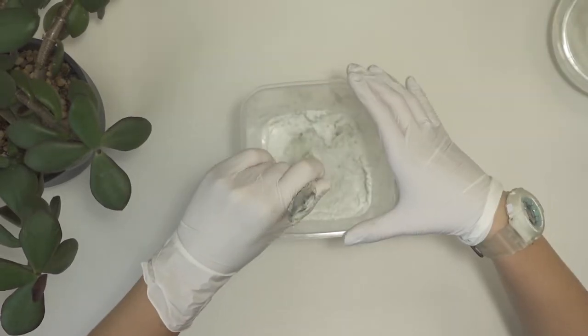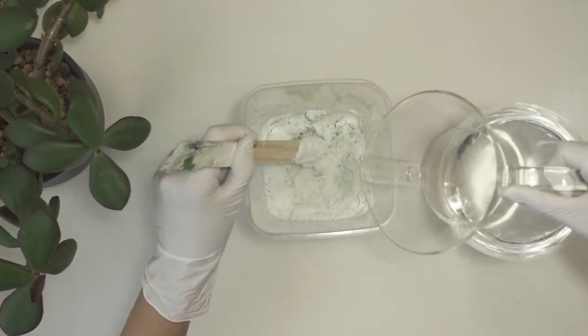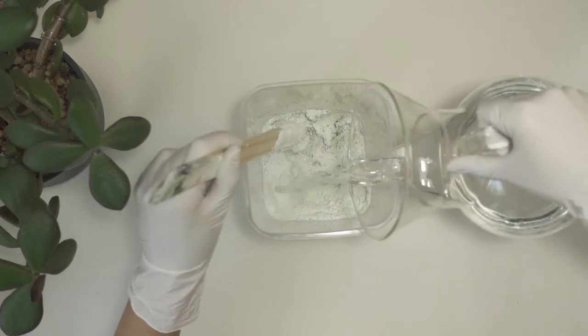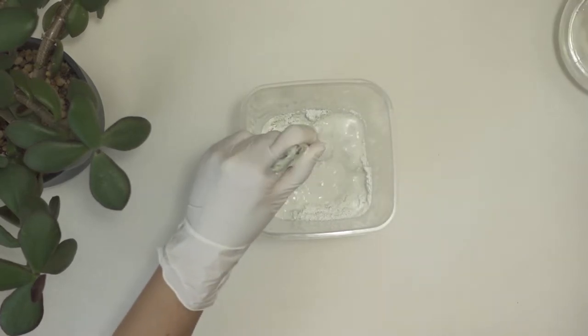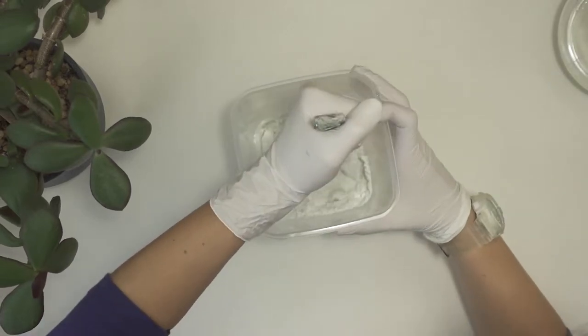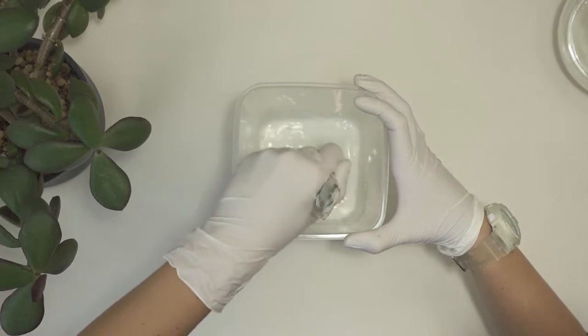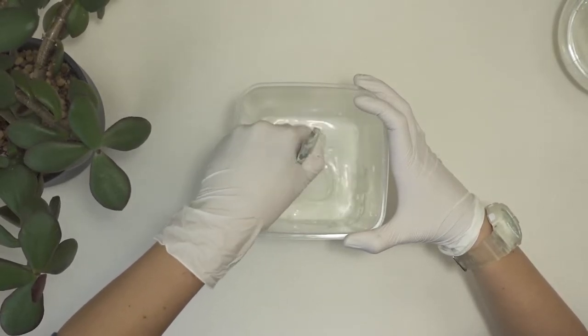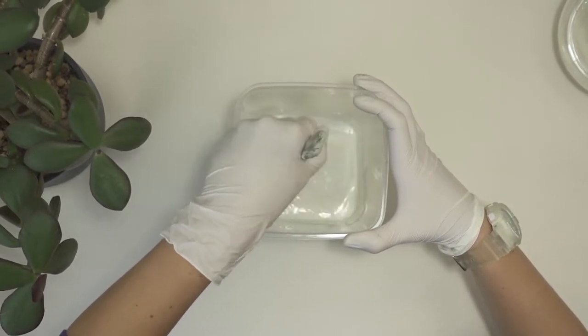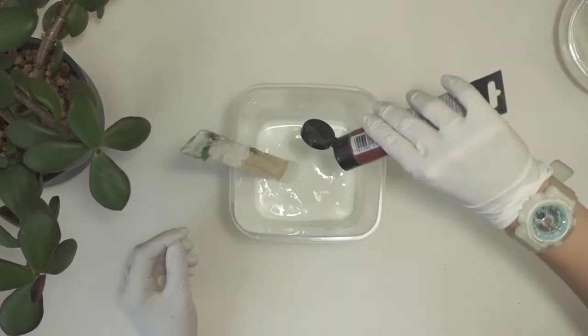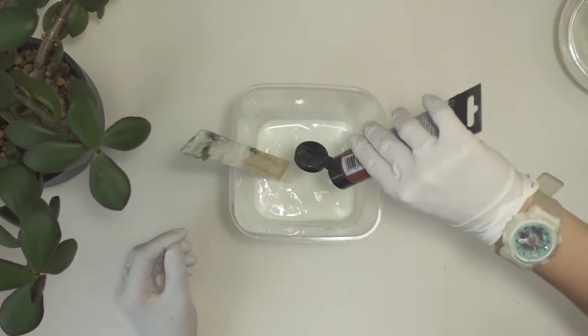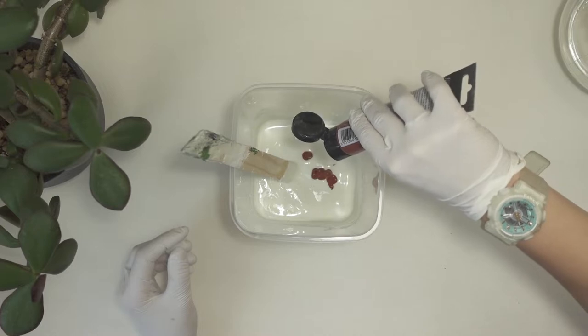I mix that well until there are no lumps and I decided to add this deep orange acrylic paint. I didn't mix it fully because I wanted to achieve a marble look. I wished I added more paint, you'll see later, but the veins are very subtle and next time I will definitely know to add more.